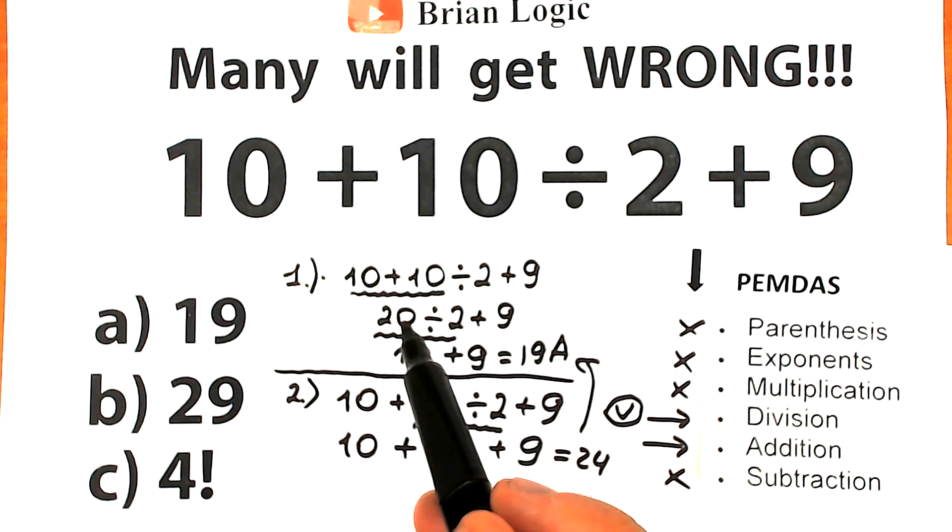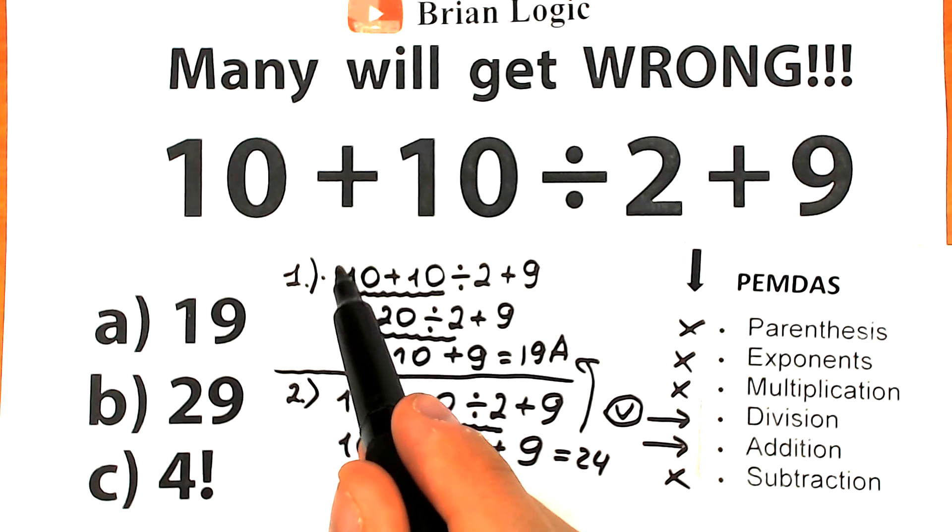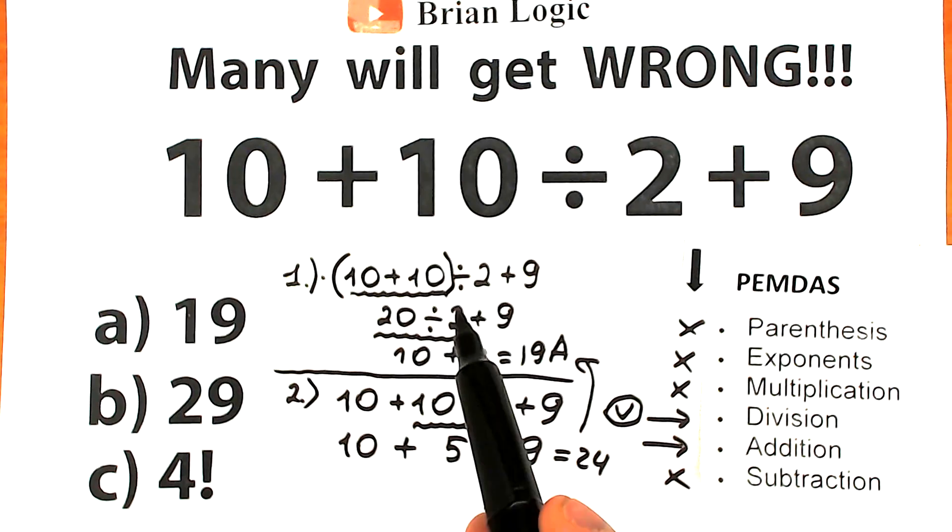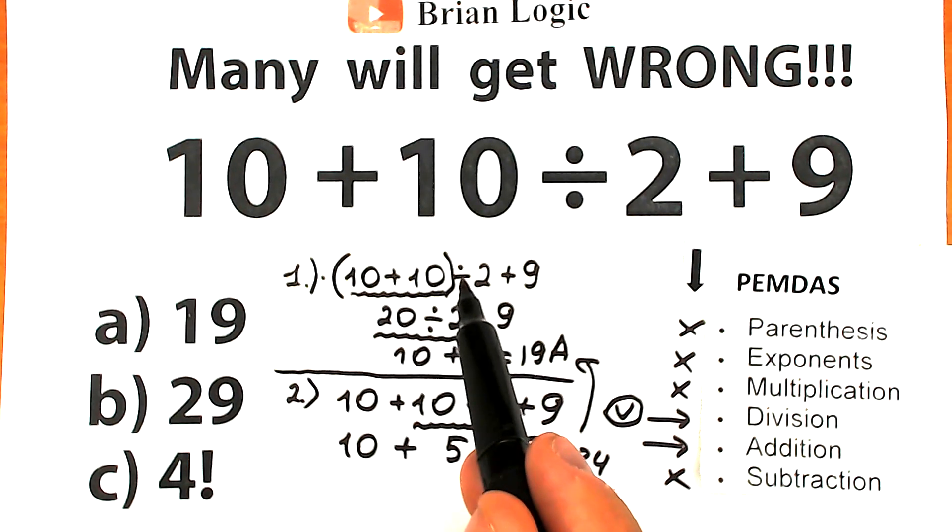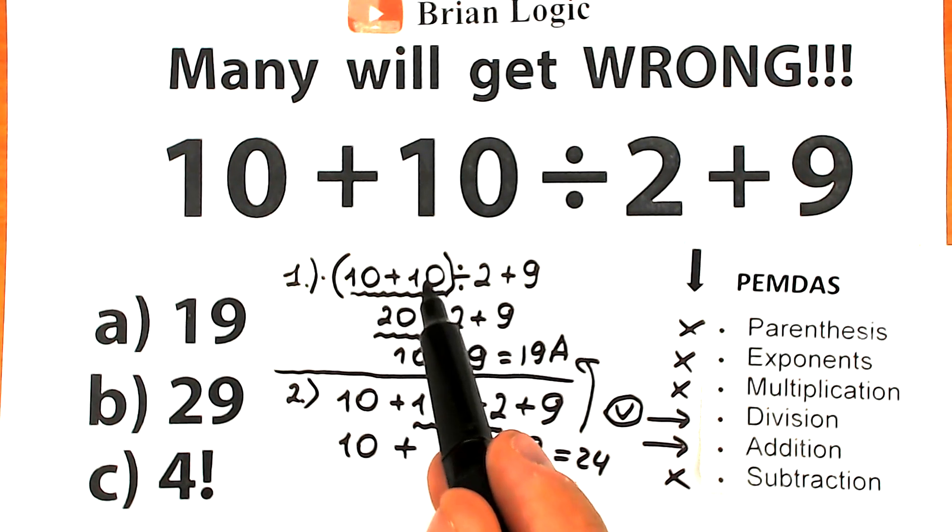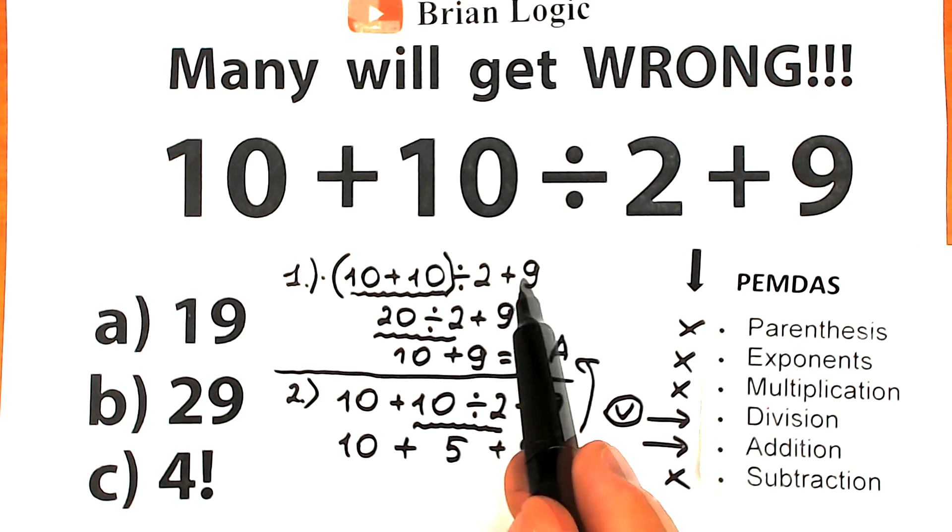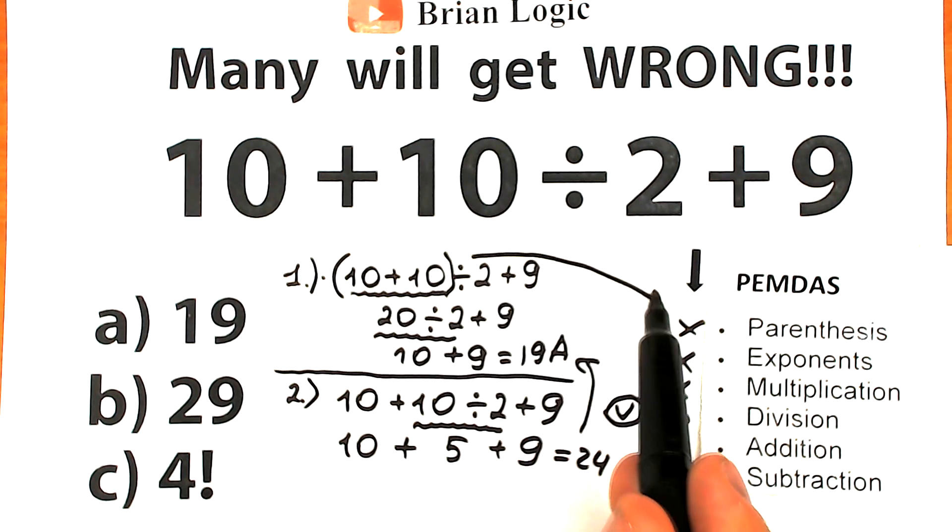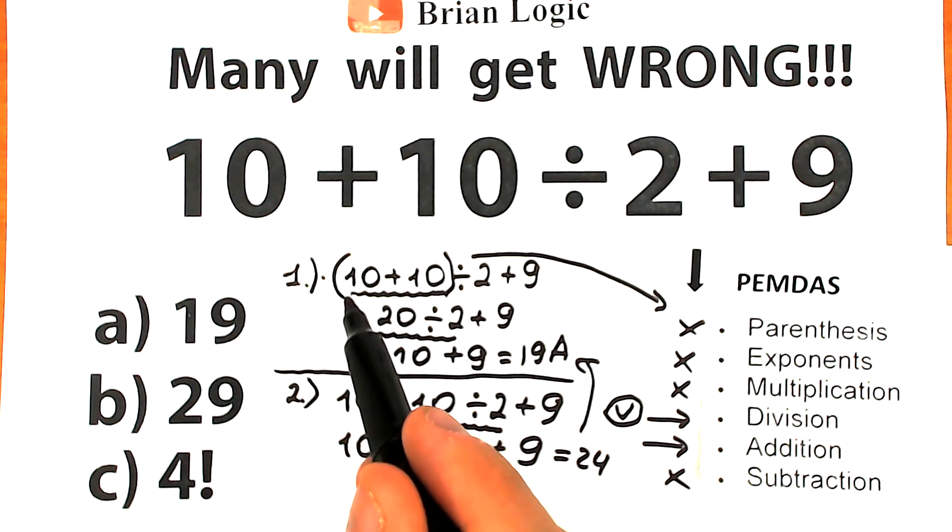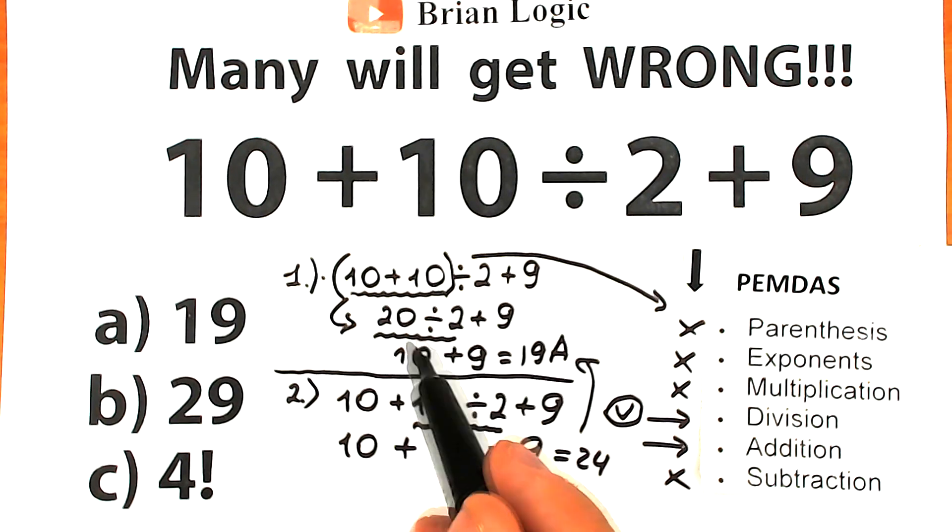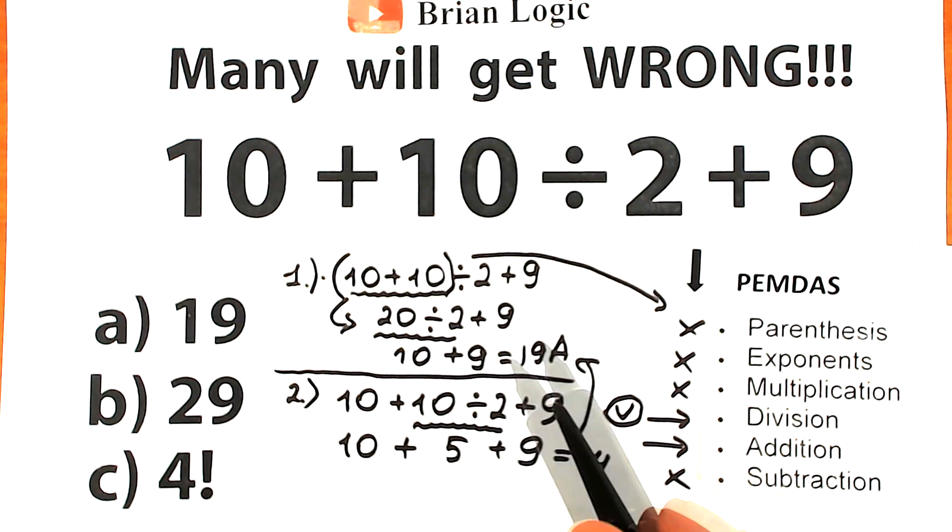But if you want to solve this question like that, your question should look like that. Okay, then addition is before division, because addition is inside parentheses, which signals us that parentheses is our first step. So then we should add it first, then we should divide, and the last step is addition. So with parentheses, correct answer is 19. But in our case, we don't have parentheses. So forget about this option A, which is a really bad thing.